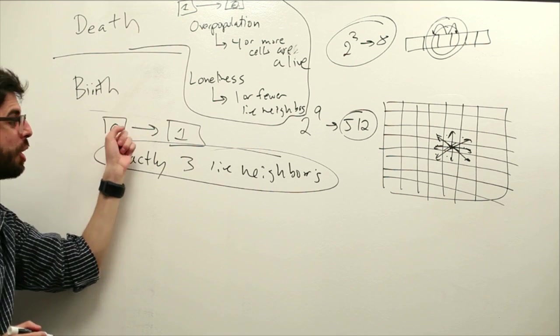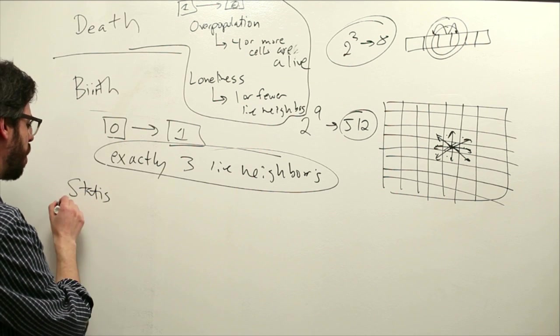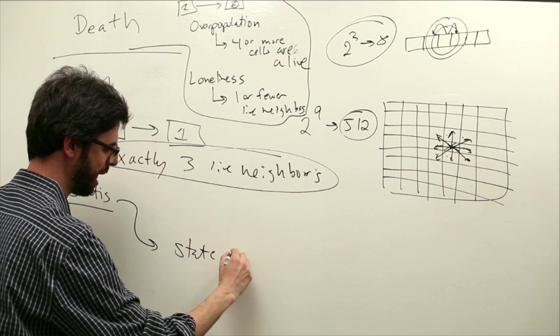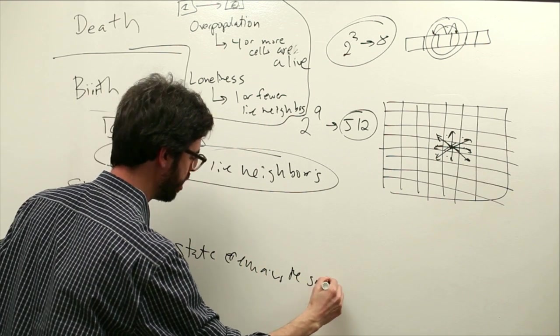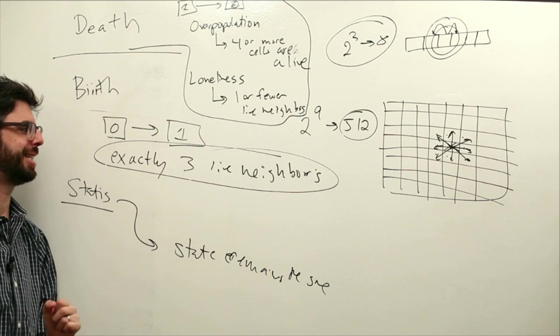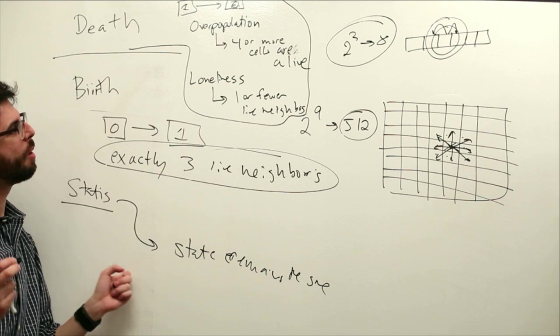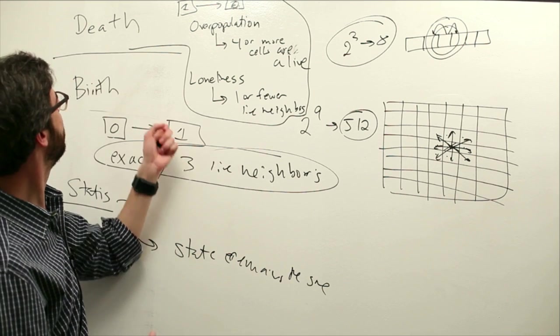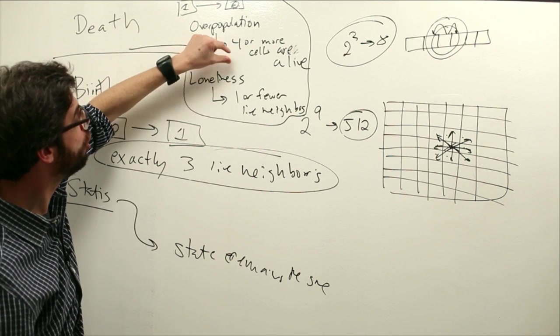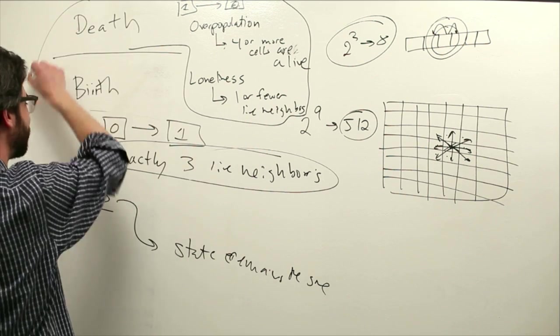And I said the last principle here is stasis. In essence, what we're saying is in all other cases, state remains the same. So if our state was zero and we don't have three live neighbors, we stay at zero. So if we have two live neighbors, one live neighbor, zero live neighbors, six live neighbors, we stay at zero. And if our state is one and we have two or three neighbors, right, it's not overpopulation or loneliness, we stay alive. So this is the set of rules.